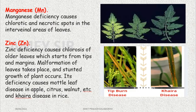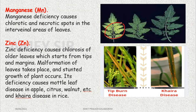Manganese is another important element. Chlorotic and necrotic spots are visible all over the leaf. You can see here what condition the leaf is in.